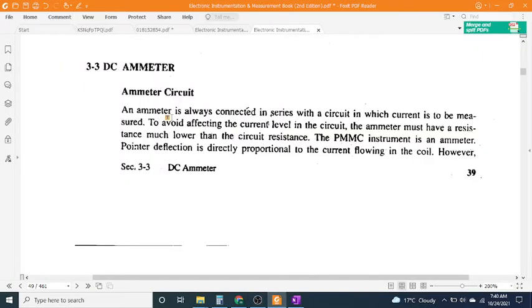The ammeter is always connected in series with the circuit in which current is to be measured. To avoid affecting the current level in the circuit, the ammeter must have a resistance much lower than the circuit resistance.